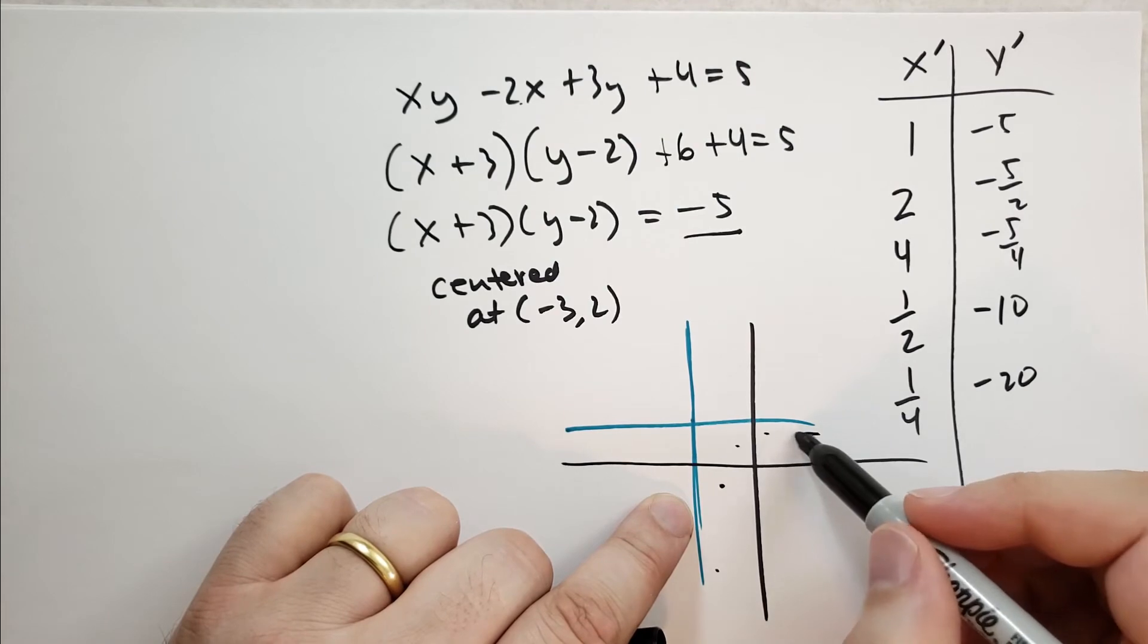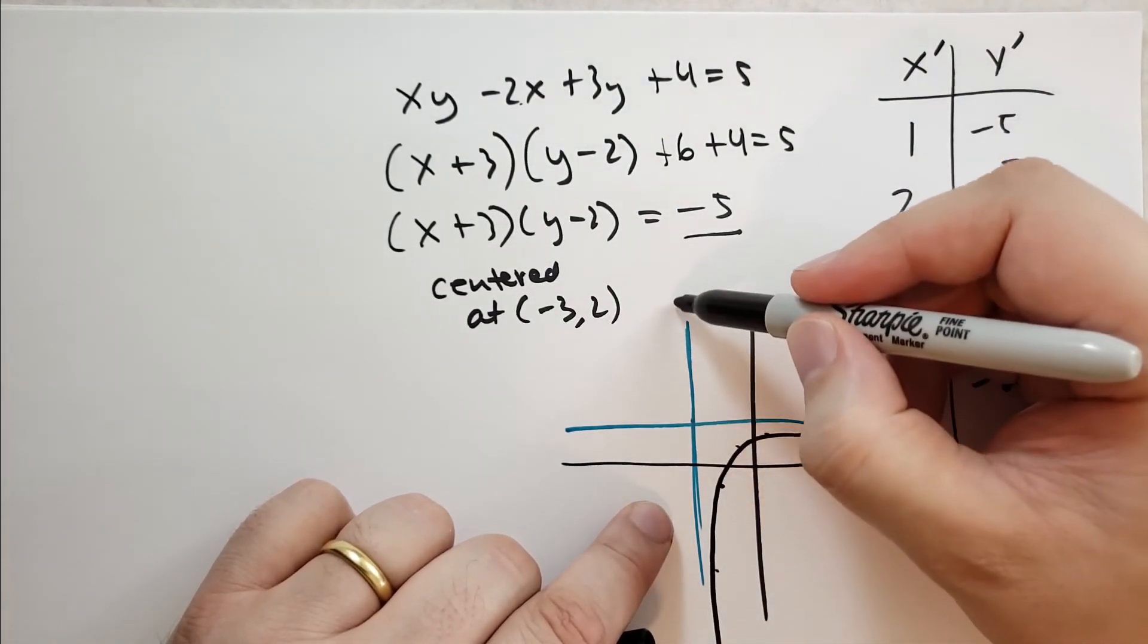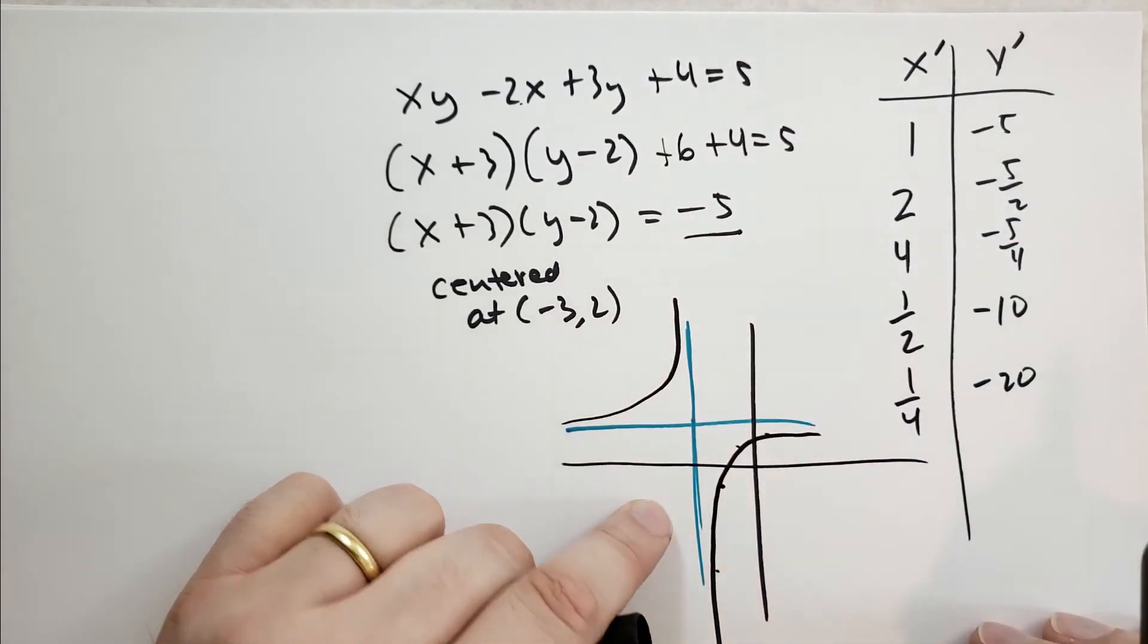So you can kind of see that it does this weird thing here. And the same, it's going to be mirrored along this axis same way. So that is kind of what it's going to look like.